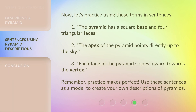Now, let's practice using these terms in sentences. 1. The pyramid has a square base and four triangular faces. 2. The apex of the pyramid points directly up to the sky. 3. Each face of the pyramid slopes inward towards the vertex. Remember, practice makes perfect. Use these sentences as a model to create your own descriptions of pyramids.